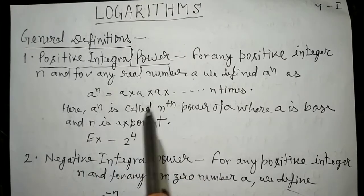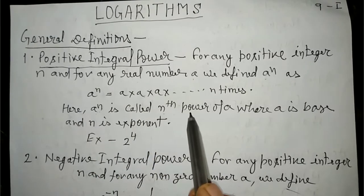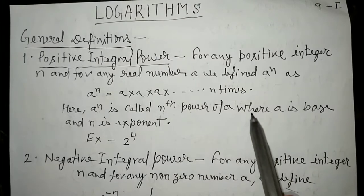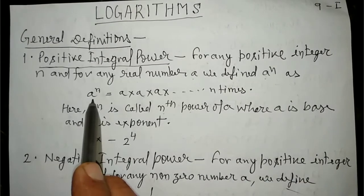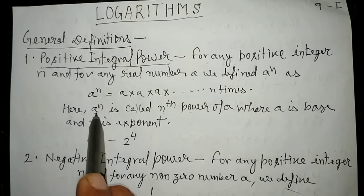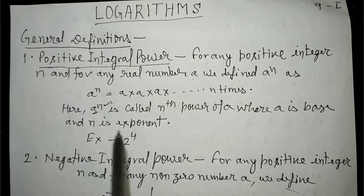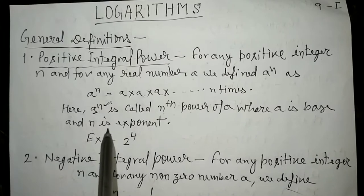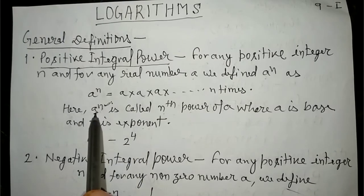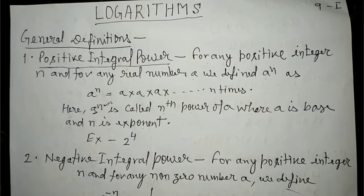A to the power n को nth power of a कहेंगे, where a is the base and n is the exponent. A को base कहेंगे और n को exponent कहेंगे।